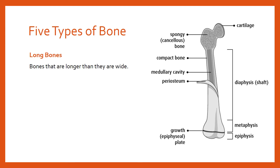Between the epiphysis and the diaphysis — between the bulky ends and the shaft — we have a growth plate, or epiphysial plate. As the name suggests, that is where growth of the bone occurs throughout early life, until the bone essentially stops growing once you get into your early 20s for most people. Inside the diaphysis, inside the bone shaft, is a cavity — it's hollow in there — filled not with bone but with bone marrow.